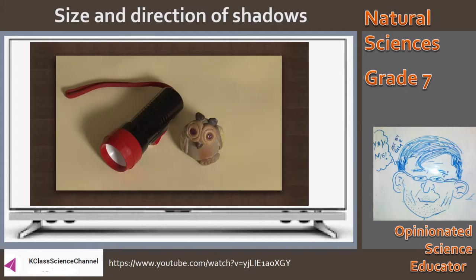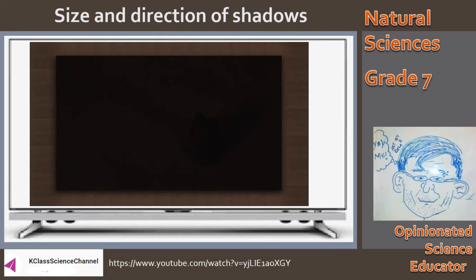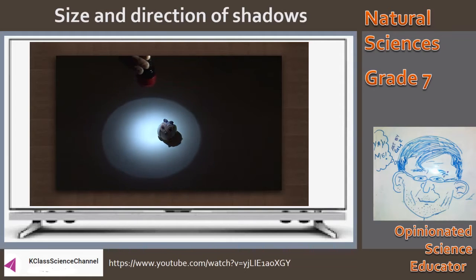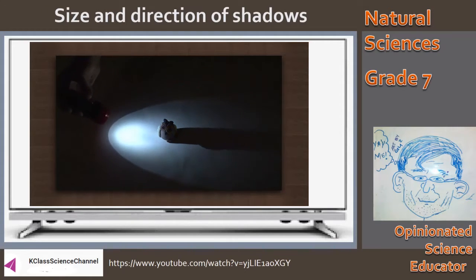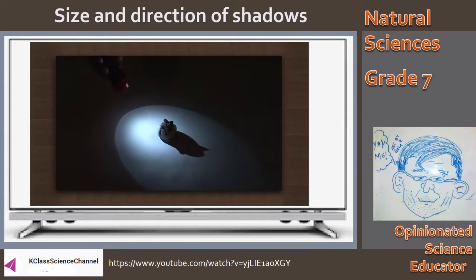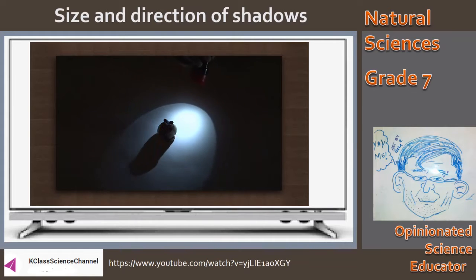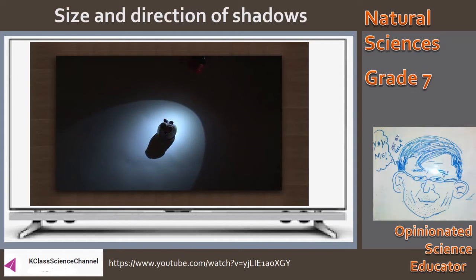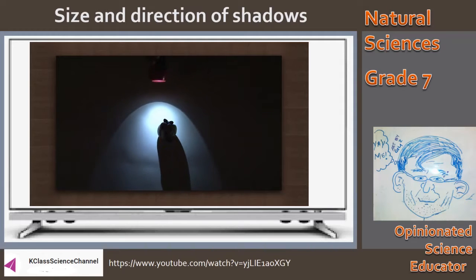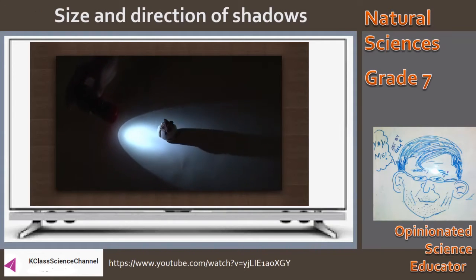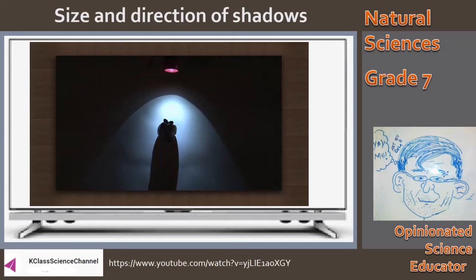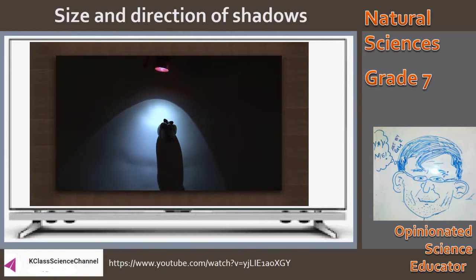For this, we need a torch and any small toy. We will keep the toy on the table vertically. When light is focused on the toy from one side, you will see that the shadow is formed on the opposite side, because light travels in a straight line. Now notice the shadow as the position of the torch is changed continuously. As the torch is revolved around the toy, the position and size of the shadow also changes, which shows that the size and shape of the shadow depends on the position and angle of the source of light. When you observe your shadow under the sun at regular intervals throughout the day, you will see the difference in size and position, which is due to the change in position of the sun relative to earth as the sun moves from east to west.